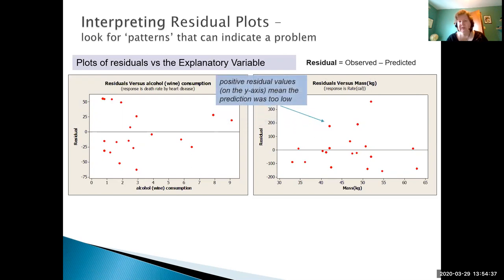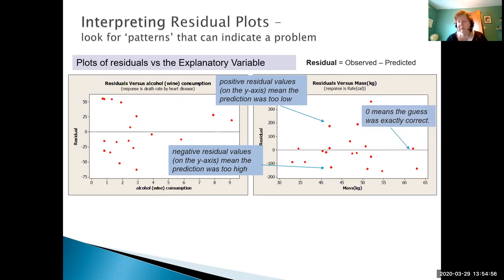So again remember residuals are our observed values minus the predicted values. So positive residuals mean the prediction was too low, meaning that my observed was higher than predicted. Negative residuals the prediction was too high, negative meaning my observed is a larger value, my predicted excuse me, is a larger value than what was actually seen. And then we could have residuals very close to zero, meaning that our residual the difference between the observed minus predicted essentially is very very small.